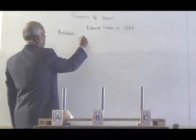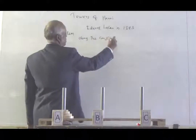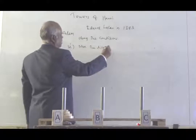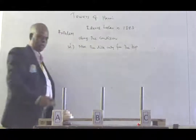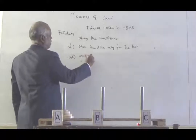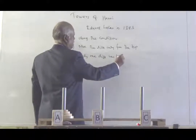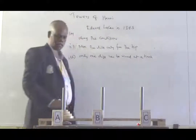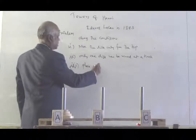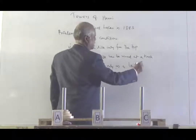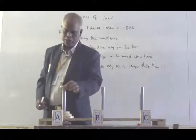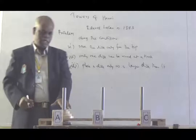Now we see the complexity — we have to obey certain conditions. Condition one: move the disc only from the top; you cannot take it from in between. Condition two: only one disc can be moved at a time. Condition three: we can place a disc only on a larger disc than it. By following all these conditions, we have to move all N disks from post A to post C.